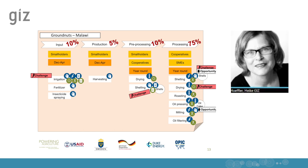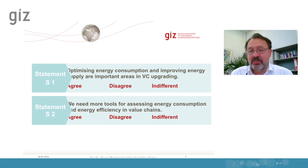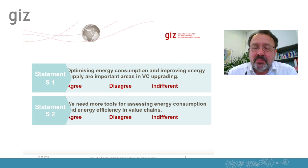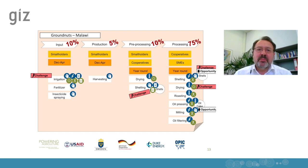Mechanization is something we have been working on for a couple of years now; energy might be coming further on top, and both in connection with digital opportunities in modern agricultural production is something heard more frequently over the last six months. Going back to the initial statements, it was surprising that everybody agreed we need more tools for assessing energy efficiency and that it is important for value chain upgrading. This is a strong statement, and as a result, one or two slides from this webinar on energy mapping will be included in the generic ValueLinks material.